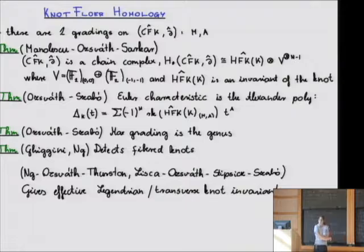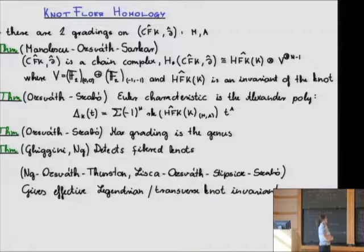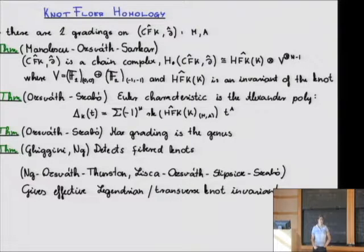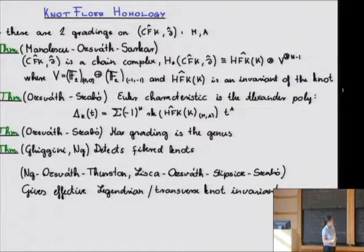This gives a homology — the key statement being that the boundary squared is zero. You can define two gradings on it in completely combinatorial terms, and with respect to these two gradings the homology is a categorification of the Alexander polynomial, in the sense that the Alexander polynomial is given as the Euler characteristic with respect to one of the gradings.